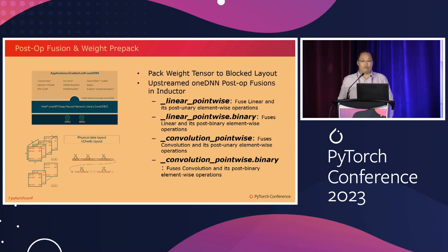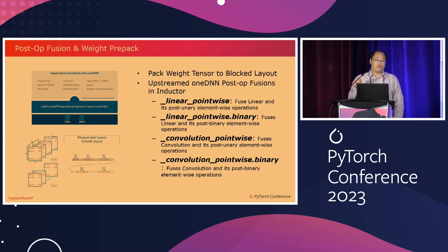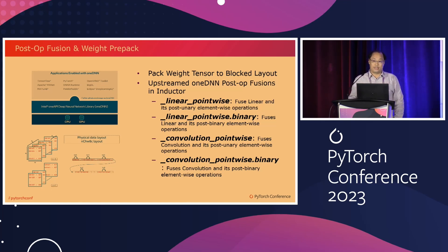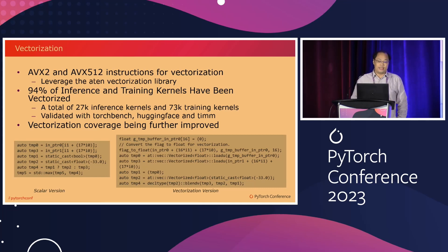We apply two-stage optimizations. For the first stage at the FX graph level, we fuse patterns related to convolutions and matrix multiplications with point-wise post-operations, and map these fusions to fusion kernels from oneDNN, the oneAPI performance library for deep learning primitives. We also prepack the weight layout to a blocked layout to optimize for better cache locality. Following that, inductor fuses the remaining point-wise and reduction operations using CPP loop nests.